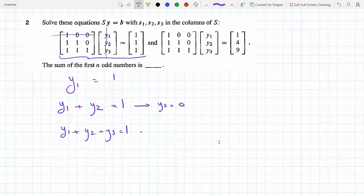The third equation is y1 plus y2 plus y3 equals 1. I know y1 and y2, so y3 would be minus y1, which is minus 1 minus 0 plus 1, which would be 0. So my answers are 1, 0, 0. That's for the first one.